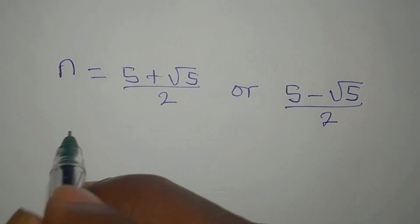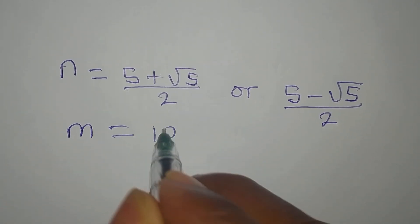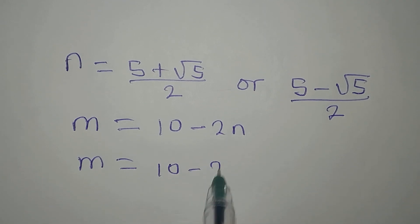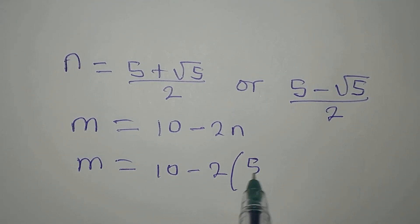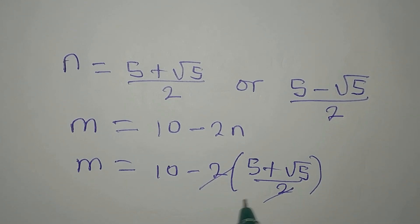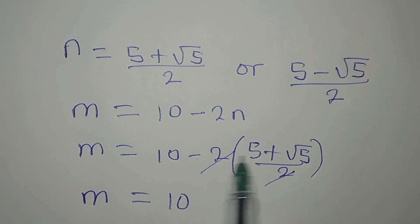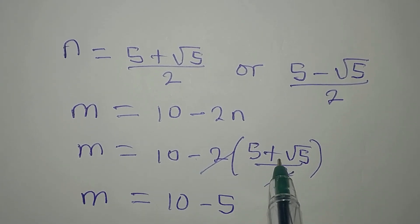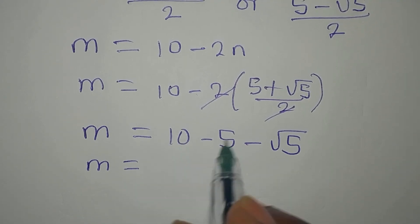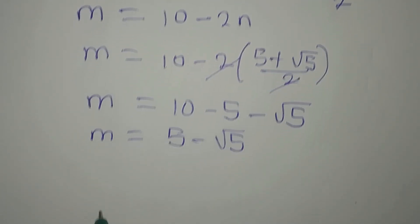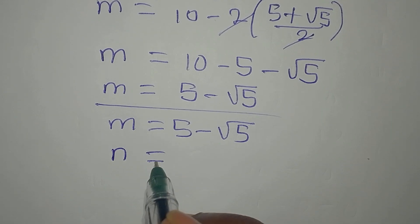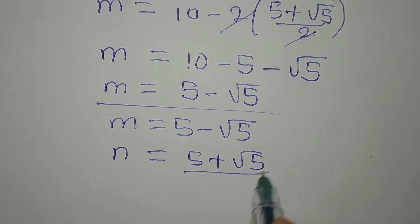Remember that equation 3 is M equals 10 minus 2N. Working with the first value of N, M equals 10 minus 2 times (5 plus root 5) over 2. The 2 cancels, giving M equals 10 minus (5 plus root 5), which equals 10 minus 5 minus root 5, so M equals 5 minus root 5. Therefore when M equals 5 minus root 5, N equals (5 plus root 5) over 2.